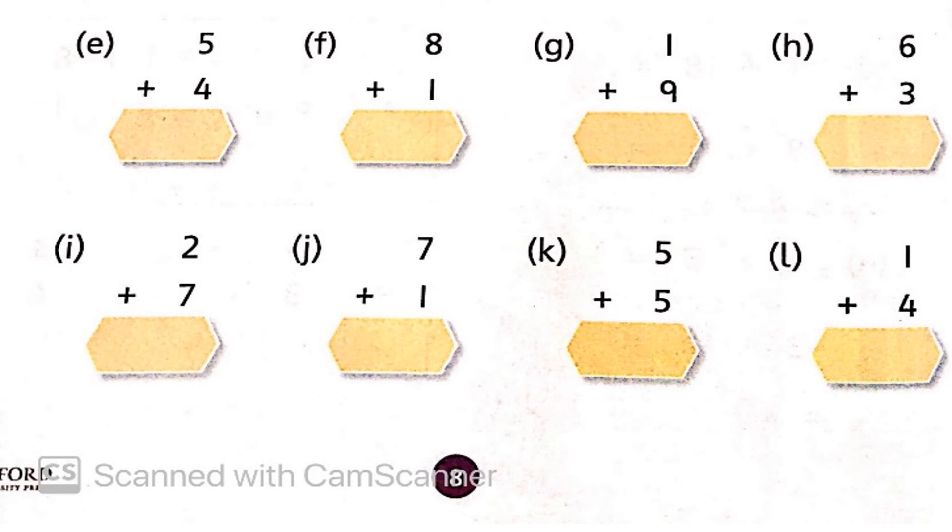Now, part E question. 5 number is bigger. Put in our mind, open 4 fingers and start counting after 5: 6, 7, 8, 9. So, we get answer 9. Now, question number F to L, you have to complete in same way.